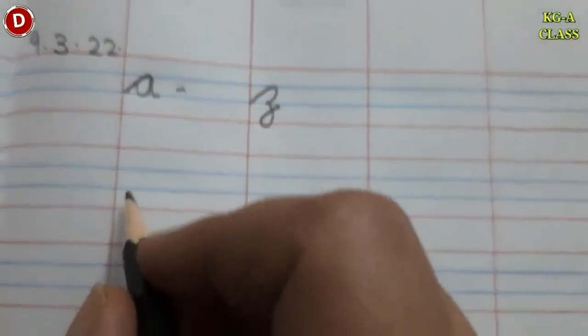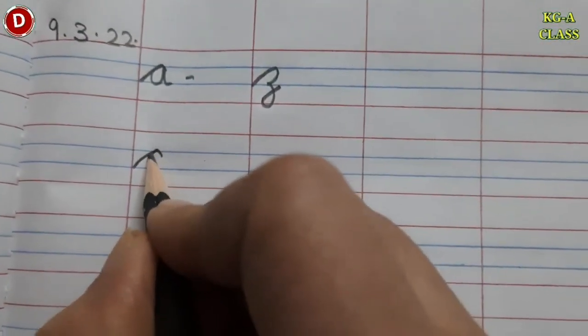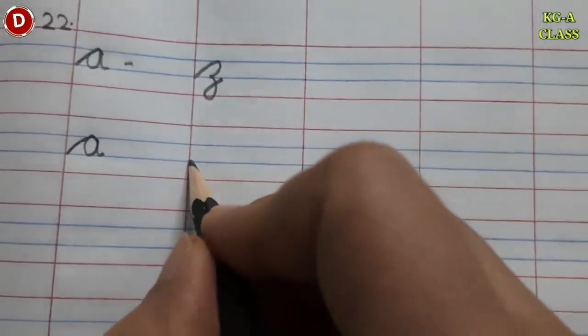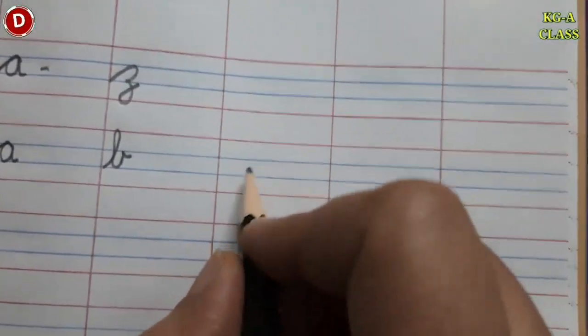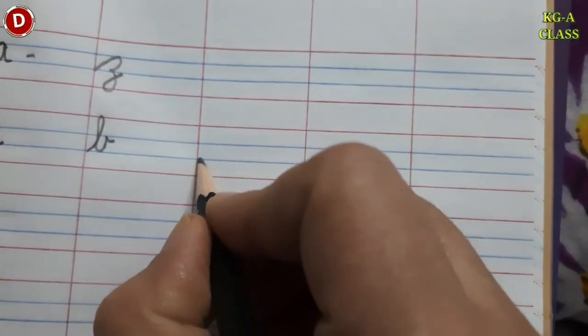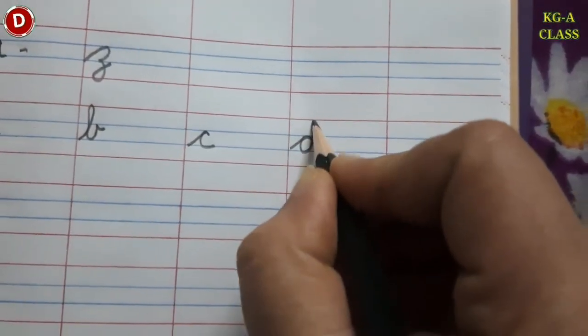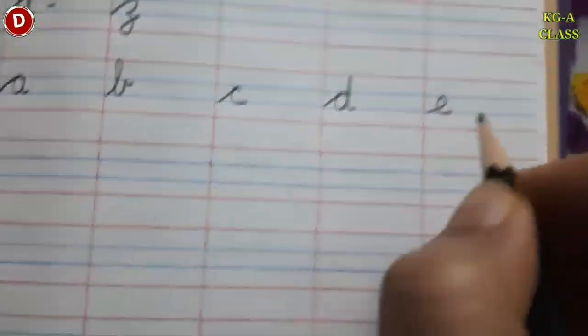Now, let's start writing. Cursive A, then B. Practice is very important, so we are doing the practice of writing cursive A to Z. Cursive C, cursive D, cursive E.